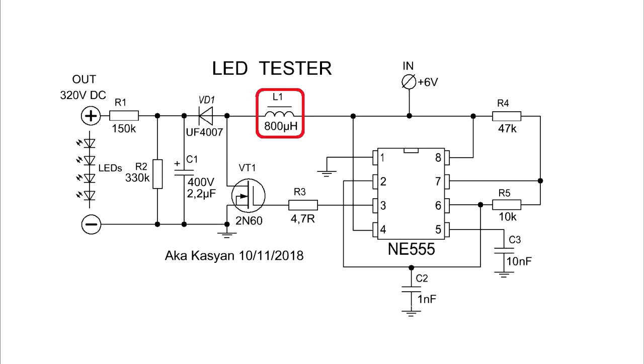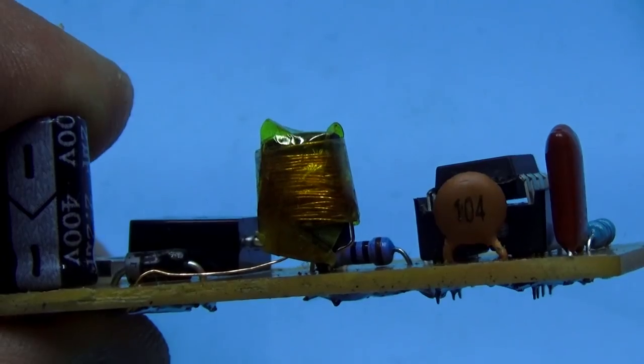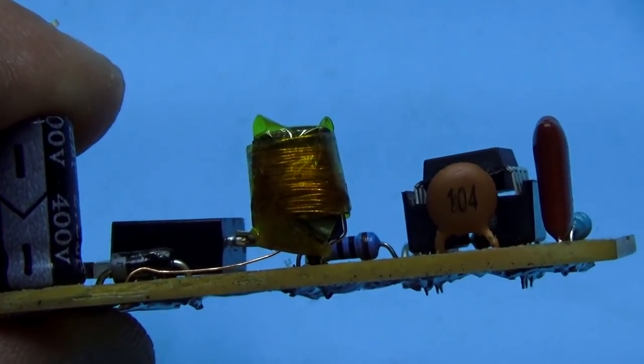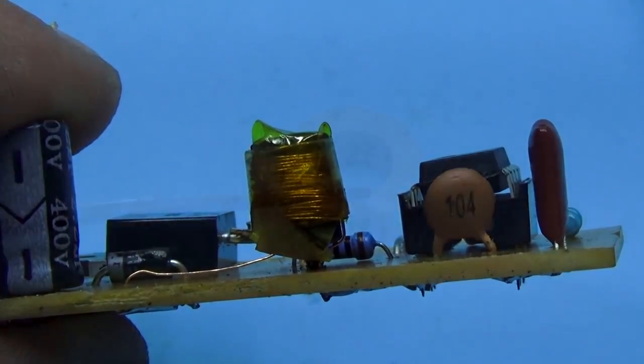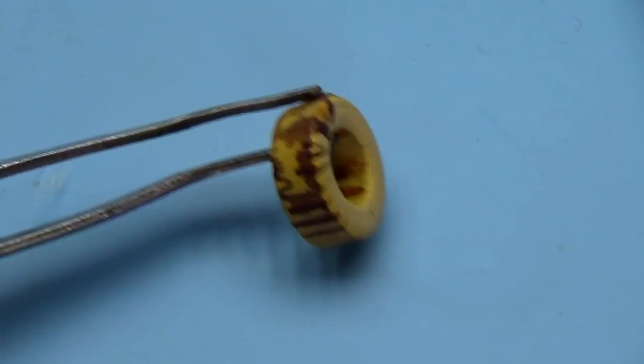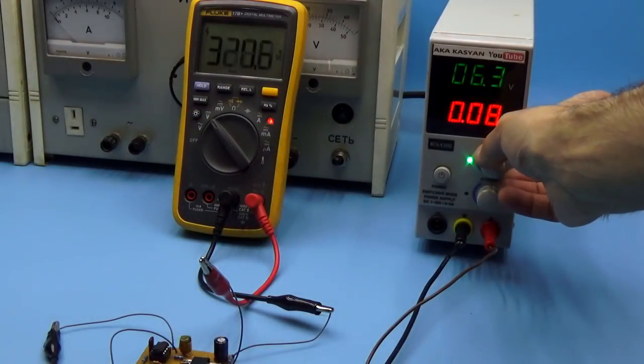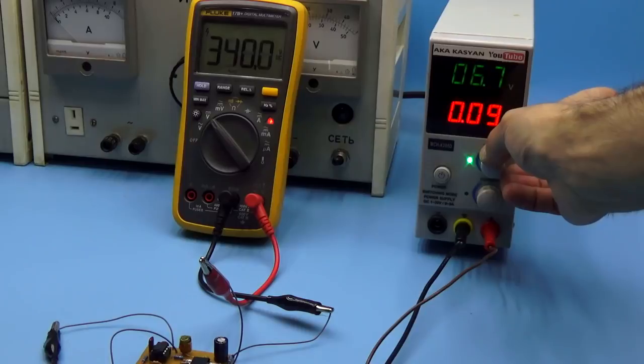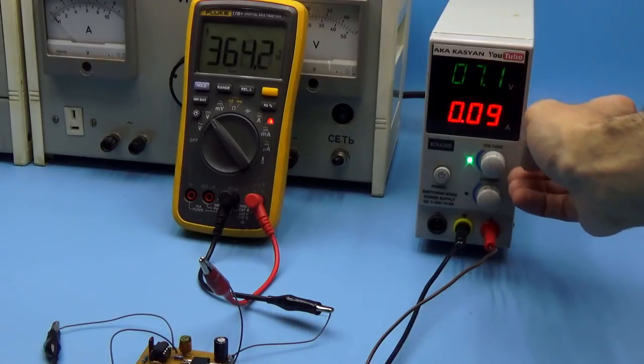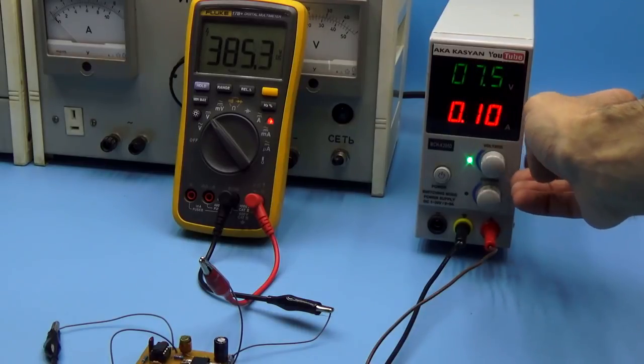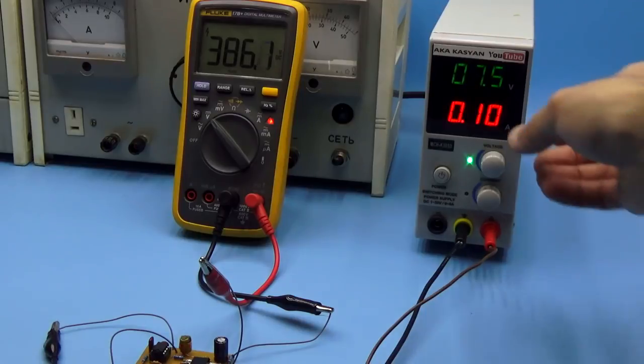The choke is wound on a ferrite dumbbell with 0.15 mm wire. The inductance is about 1000 microhenry. You can wind on rings of powdered iron or ferrite rod. As already said, the output voltage of the converter depends on the input. With a supply voltage of 6 volts, the output is about 320 volts.